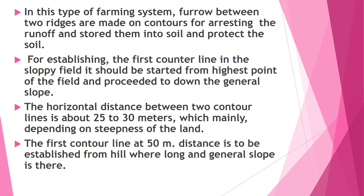In this type of farming system, the first control line should be started from the highest point of the field. The horizontal distance between two control lines is about 25 to 30 meters, which mainly depends on the steepness of the field.